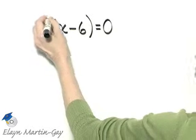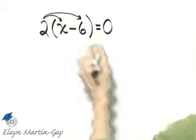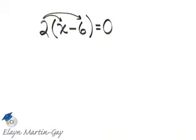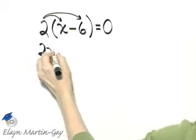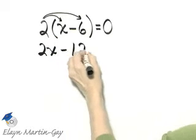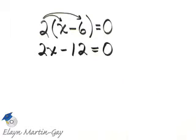The answer is yes. So we will use the distributive property to multiply and thus remove the parentheses. 2 times x is 2x minus 2 times 6 is 12, and that equals zero.